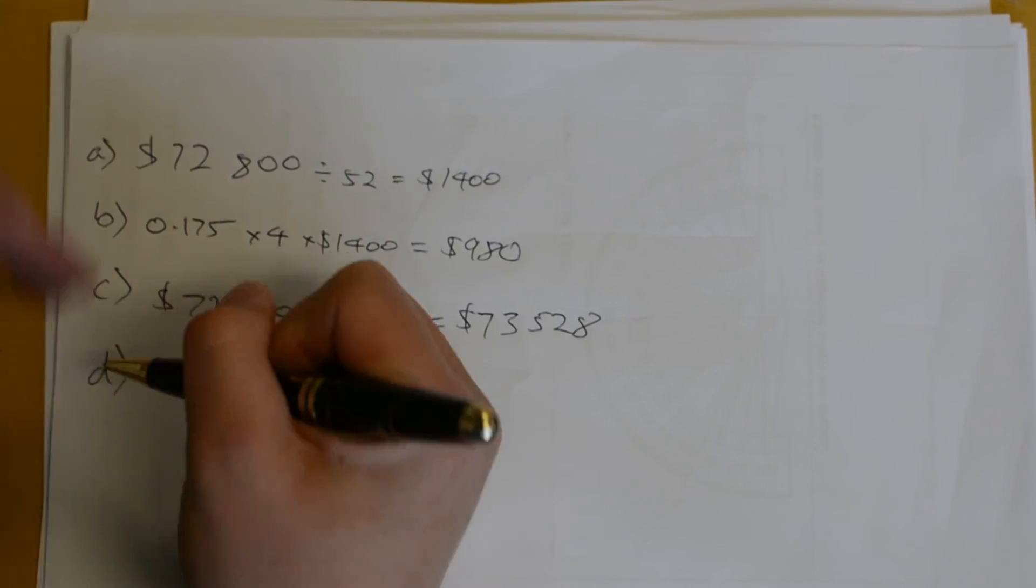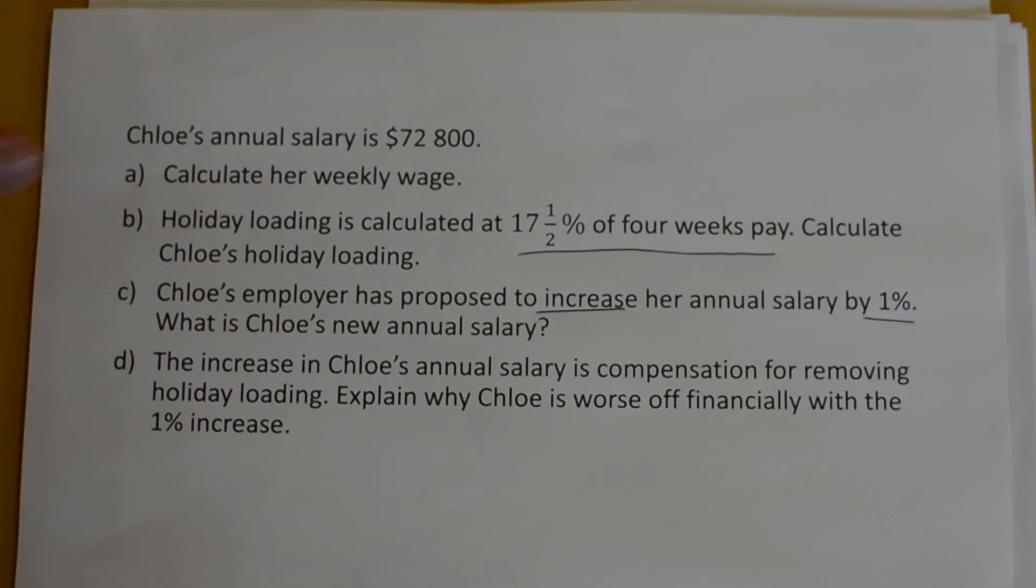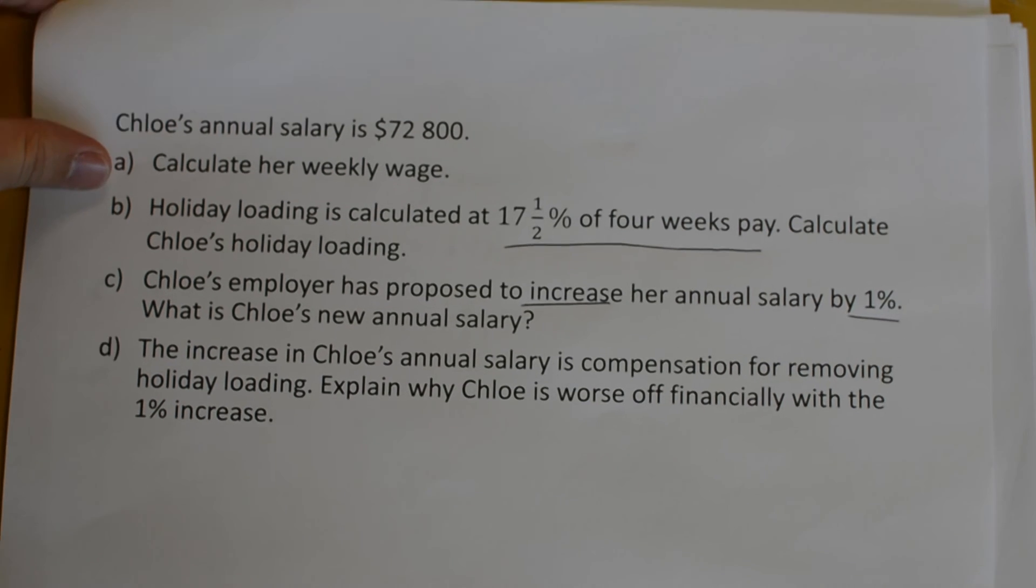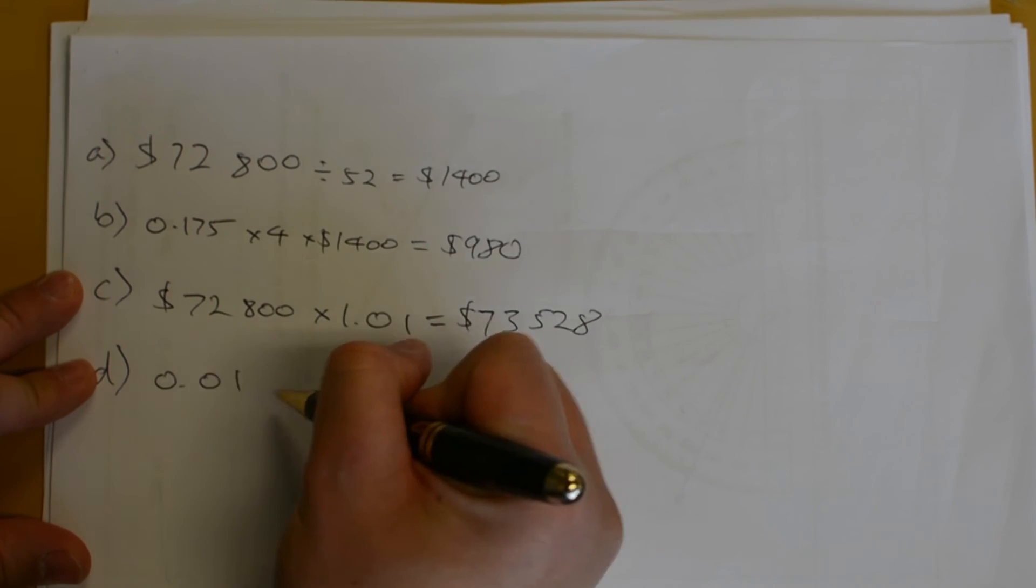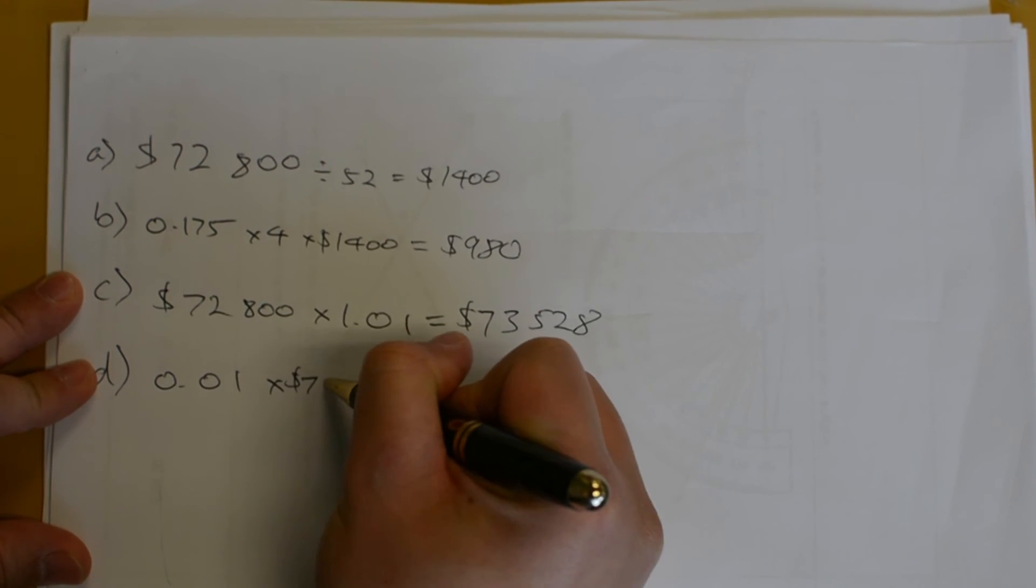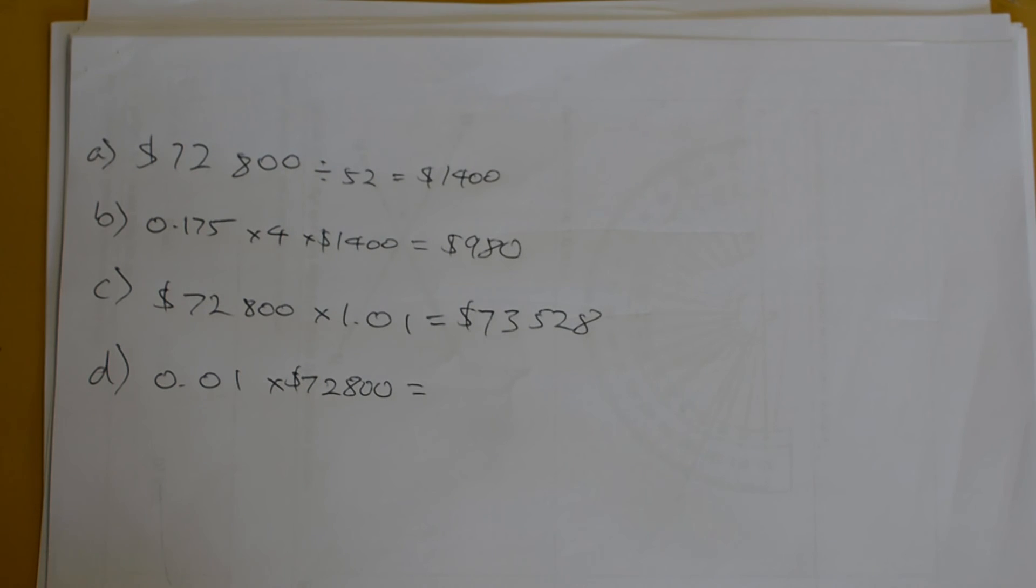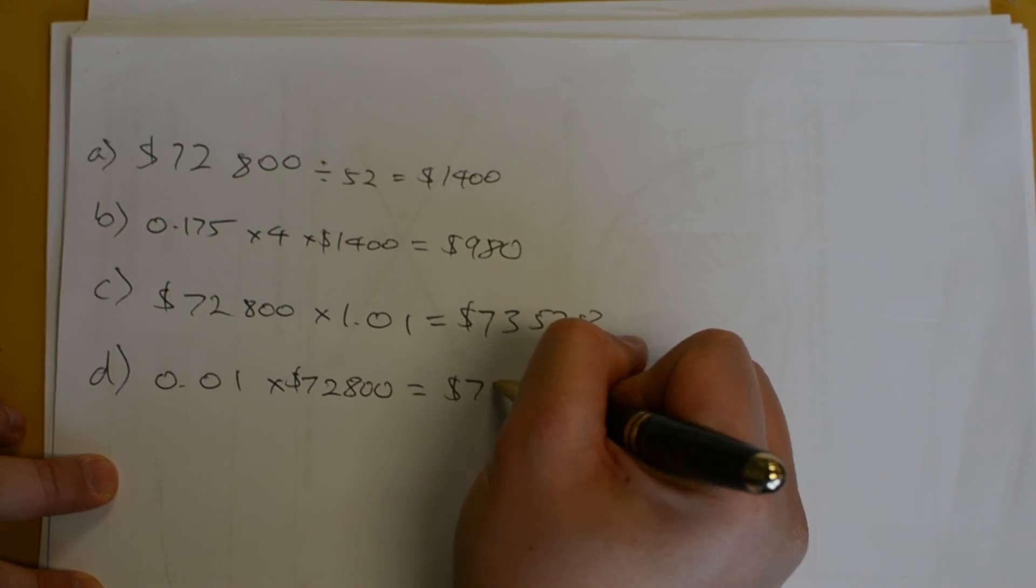Part D, the increase in Chloe's annual salary is compensation for removing holiday loading. Explain why Chloe is worse off financially with the 1% increase. Whoever is paying her is offering her either the 1% increase or the holiday loading. Let's find out how much that 1% increase actually comes to. If I do 1% or 0.01% of her annual salary, it will come out to be $728.